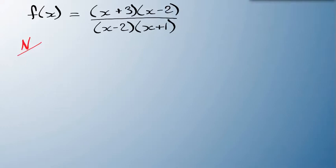So let's start with x plus 3 equals zero. It equals zero when x is minus 3. And the other one, x minus 2, that equals zero when x equals 2.